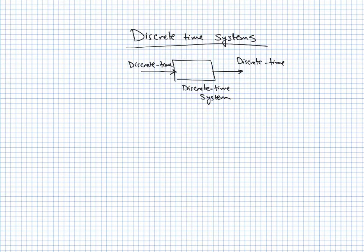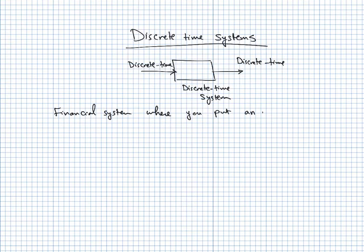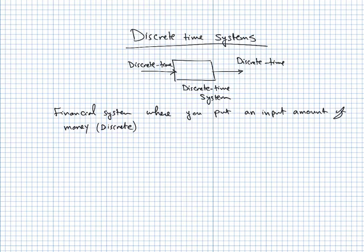Let me give you an example of a discrete time system. Assume you have a financial system where you put in an input amount of money, which is discrete — basically an integer value, a few thousand or whatever — and this happens on a monthly basis.